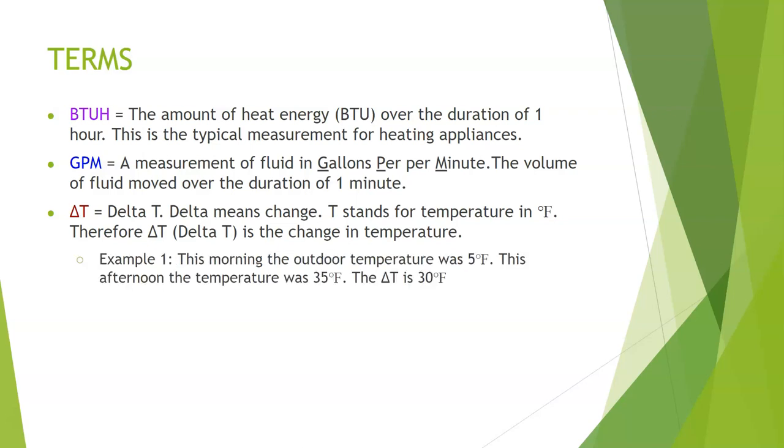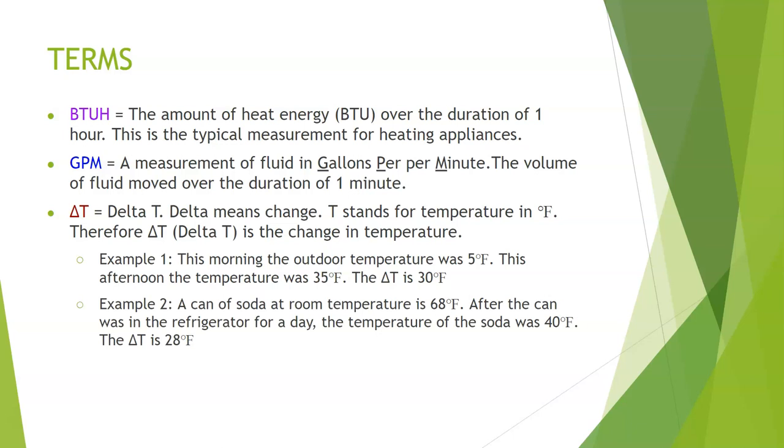Some examples: this morning the outdoor temperature was 5 degrees Fahrenheit. This afternoon the temperature was 35 degrees Fahrenheit. The delta T is therefore 30 degrees because I went from 5 up to 35, a difference of 30. The second example: a can of soda at room temperature is 68 degrees Fahrenheit. After the can was in the refrigerator for a day, the temperature of the soda was 40 degrees Fahrenheit. Therefore the delta T is 28 degrees Fahrenheit.